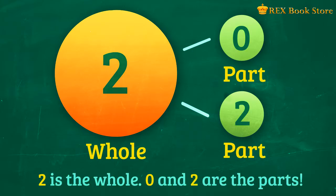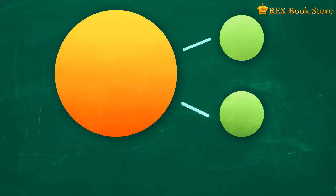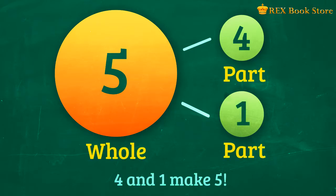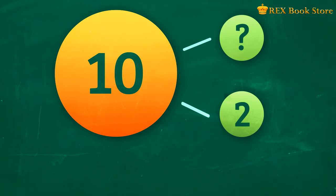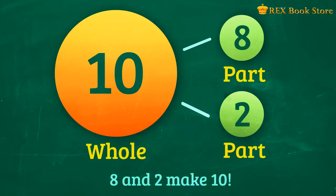Let's practice our skill in completing the number bond. Can you name the missing part? Right! 4 and 1 make 5. How about for this number bond? What is the missing part? That's right! 8 and 2 make 10.